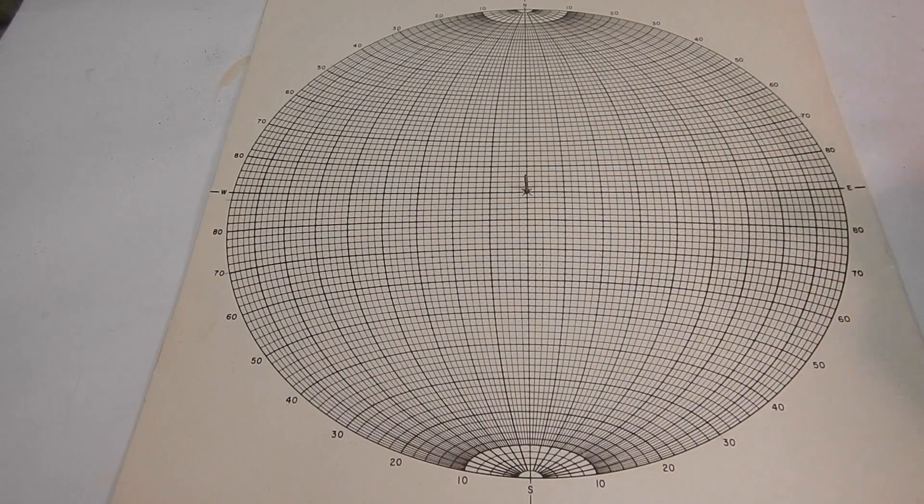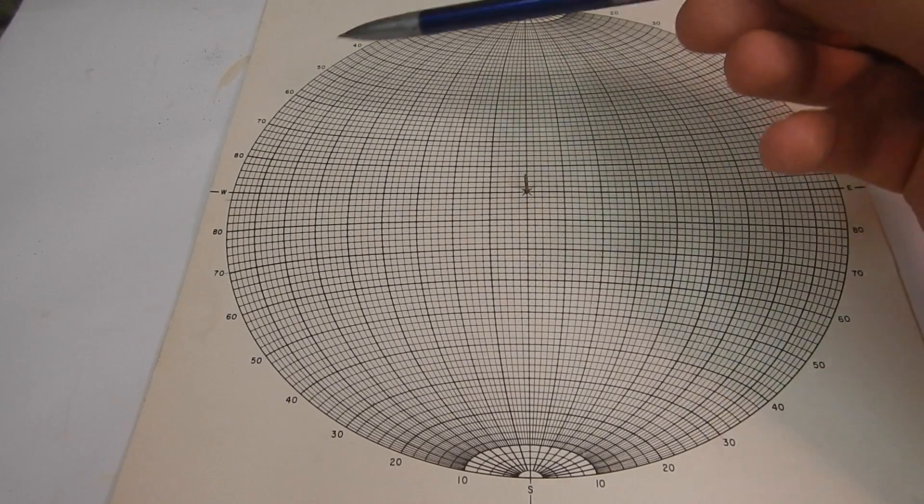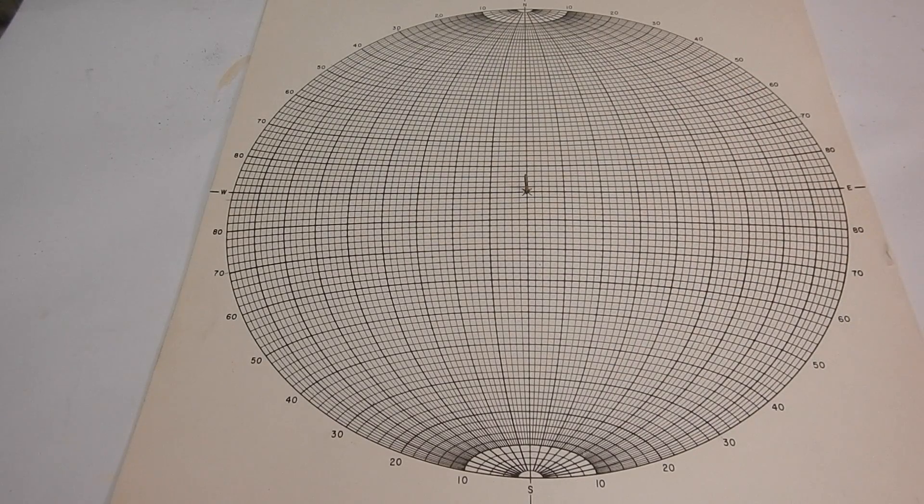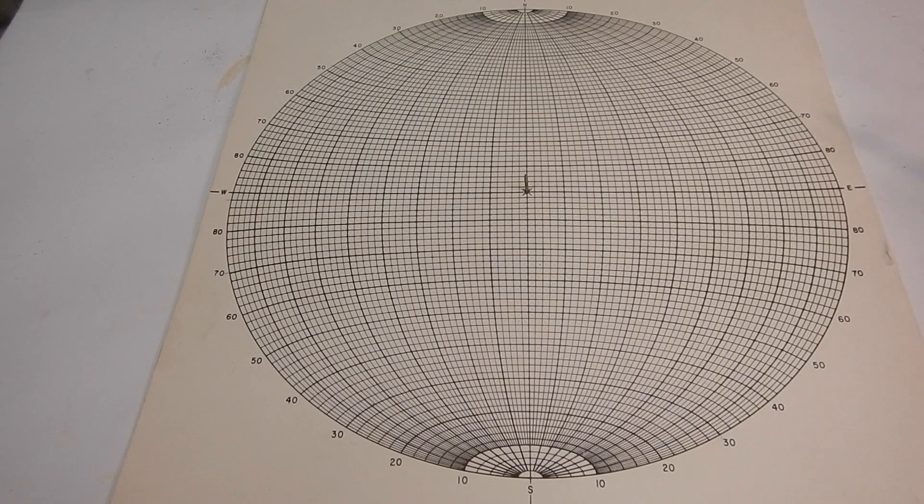So a few definitions about the lines you see on here. The circle that goes all the way around the stereonet is the primitive circle. You'll be moving along this to mark ticks off for different degrees. As you can see, degrees run around the circle.